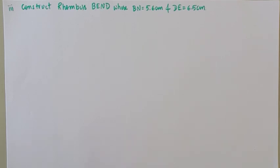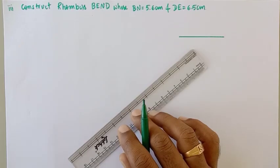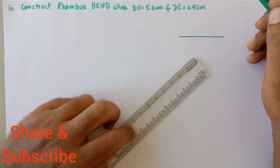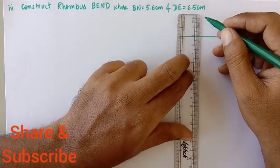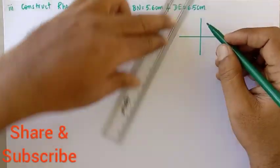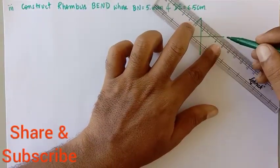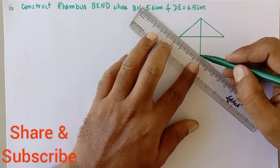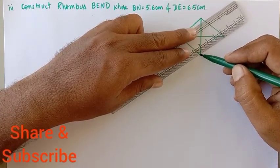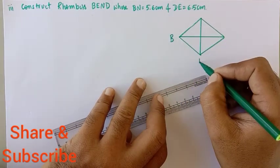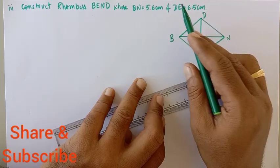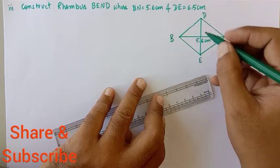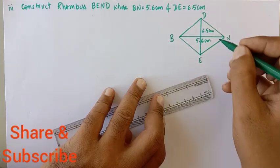Construct rhombus BEND, where BN is equal to 5.6 cm and DE is equal to 6.5 cm. In a rhombus, all sides are equal, and the diagonals are mutually perpendicular to each other. I will be constructing a rough diagram of the rhombus and name it BEND. BN measures 5.6 cm and DE measures 6.5 cm.